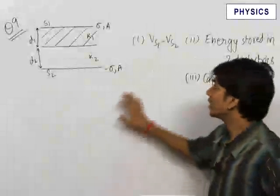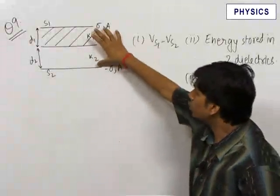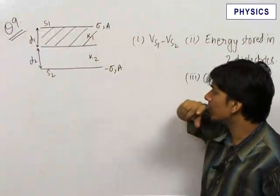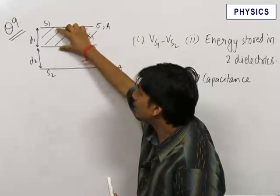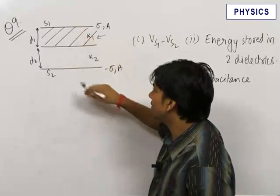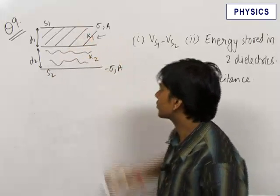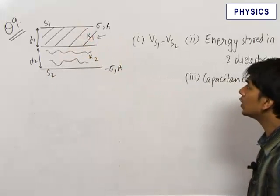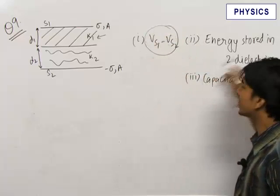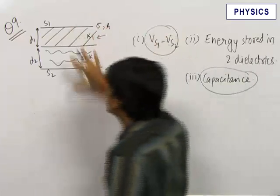This is a very important question — we learn a lot of things from it. We have two plates of charge density sigma and minus sigma, each with surface area A. Up to a distance d1 there is a material of dielectric constant k1, and beyond that there is a material of dielectric constant k2. We need to find the potential difference between the two plates, the energy stored in the two dielectrics, and the total capacitance of this system.